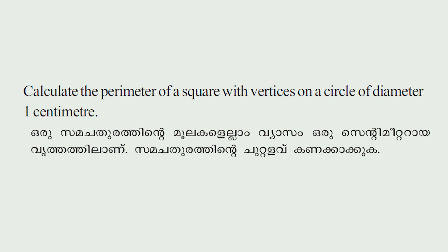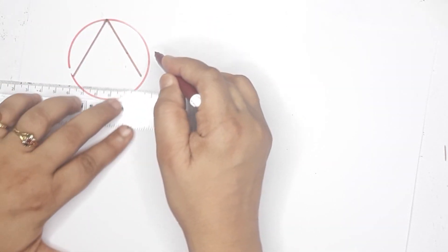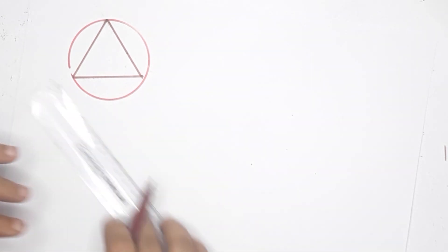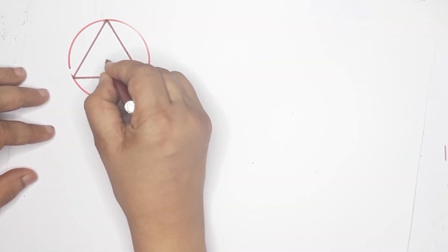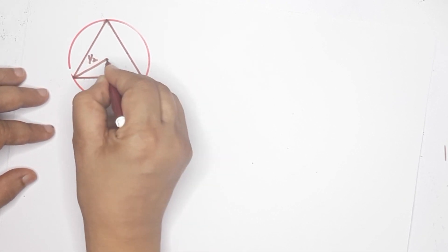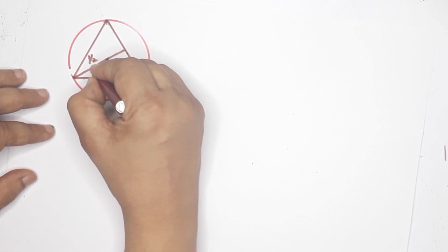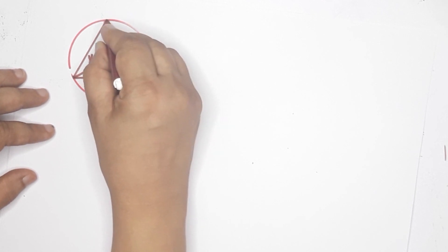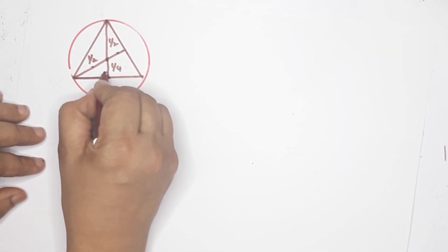Next question: Calculate the length of a side of an equilateral triangle with vertices on a circle of diameter 1 cm. We have a circle of diameter 1 cm with an inscribed equilateral triangle. The radius is half, which is 1/2. If we extend the perpendicular from the center to a side, that half-side is 1/4. So side AD equals root of (1/2 squared minus 1/4 squared) — that is root of (1/4 minus 1/16), which equals root of (4 minus 1)/16. That gives root 3 by 4.